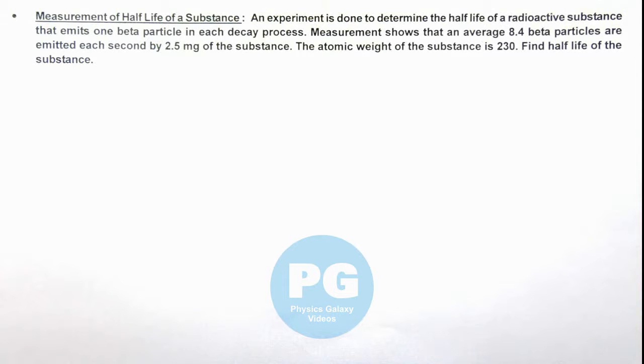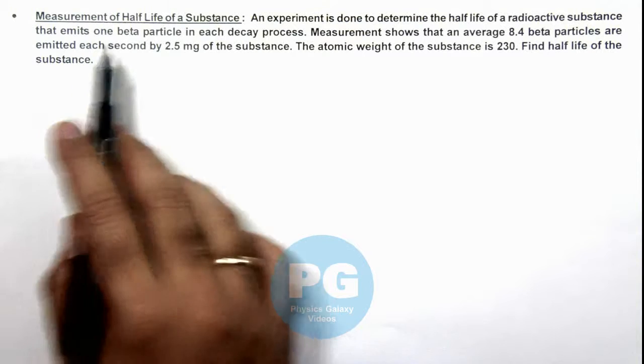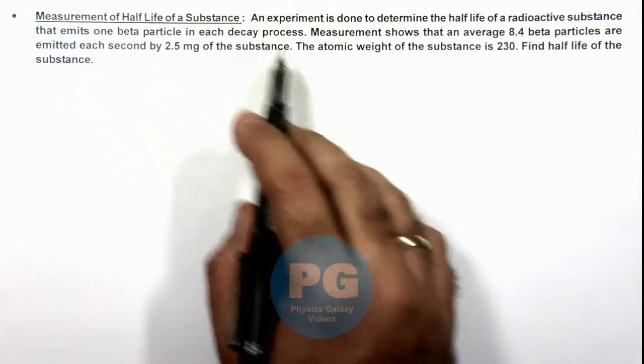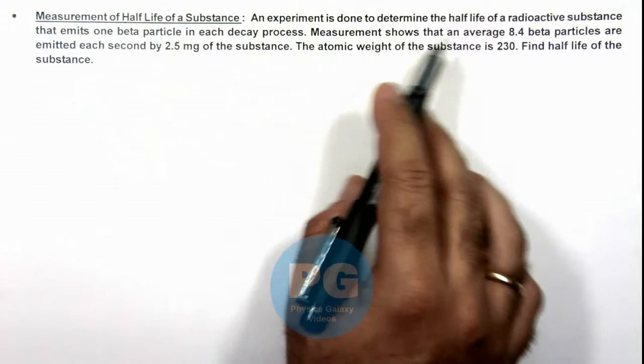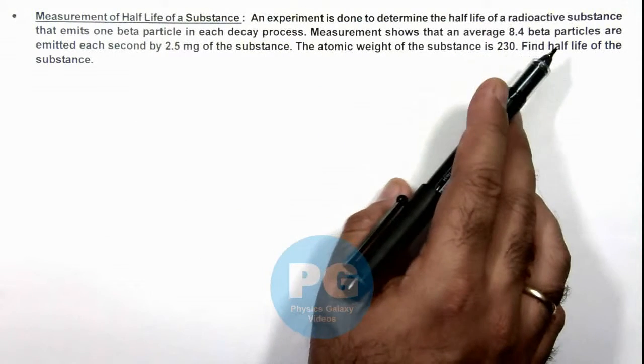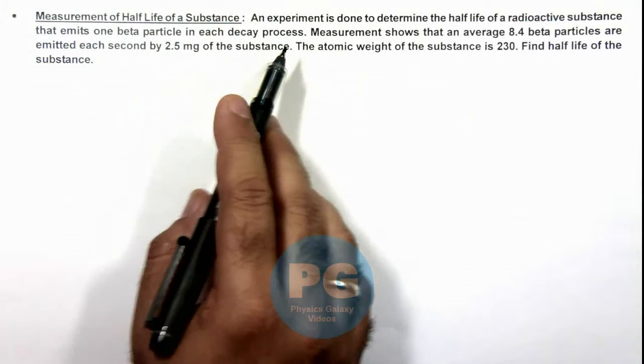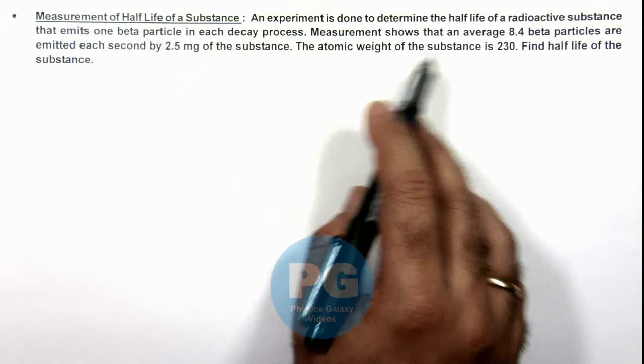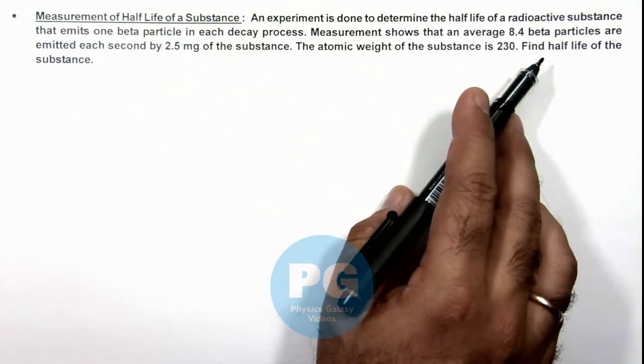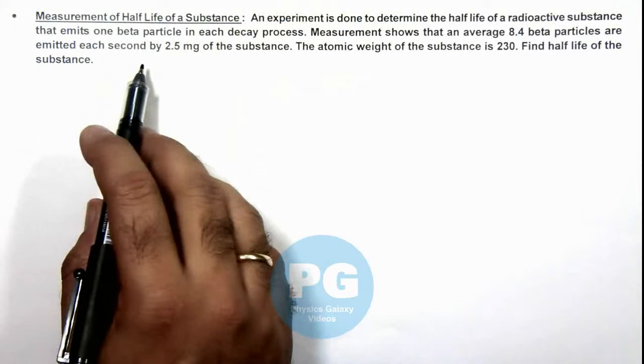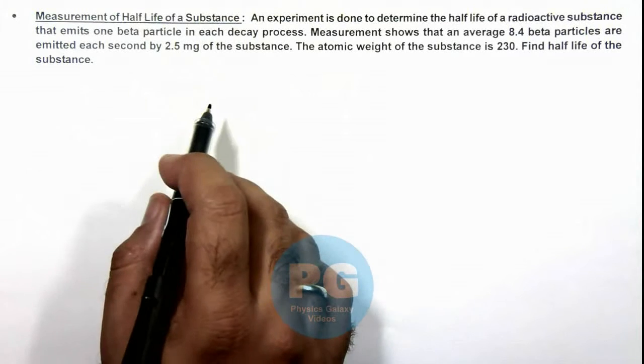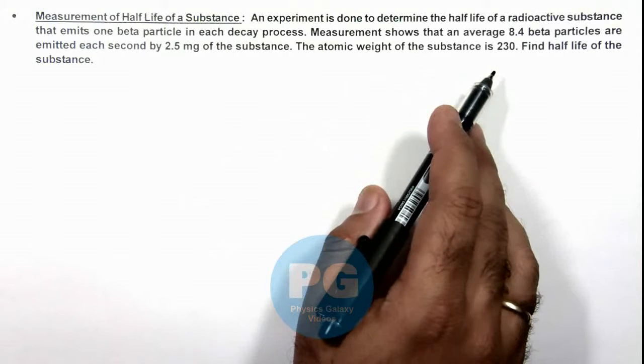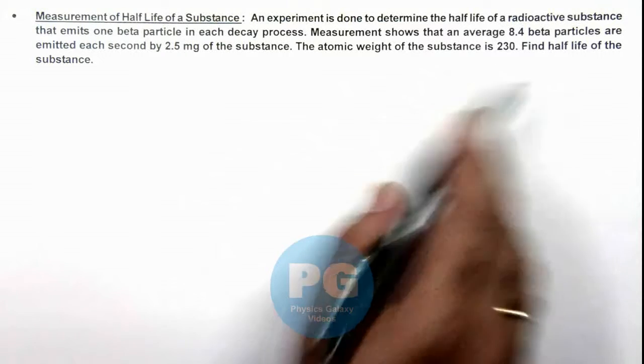In this illustration we'll discuss the measurement of half-life of a substance. An experiment is done to determine the half-life of a radioactive substance that emits one beta particle in each decay process. The measurement shows that an average of 8.4 beta particles are emitted each second by 2.5 milligrams of the substance. The atomic weight of the substance is 230 and we are required to find the half-life of the substance.